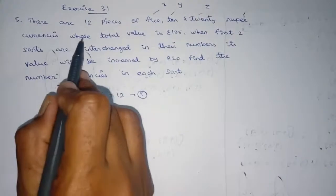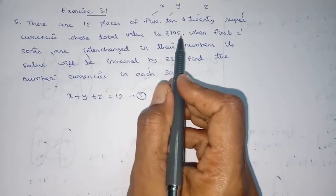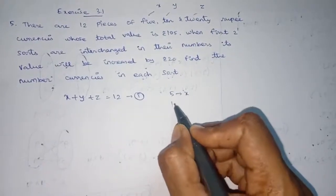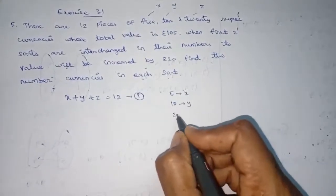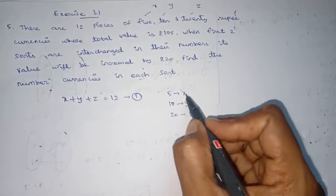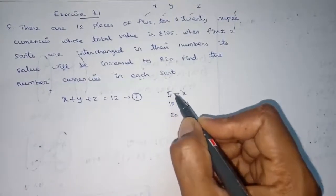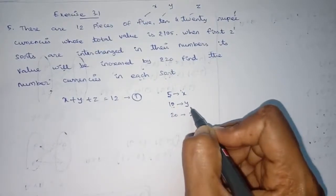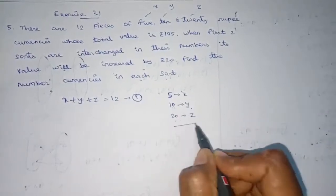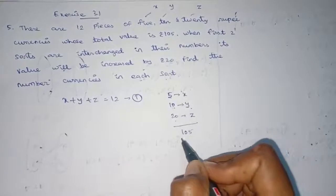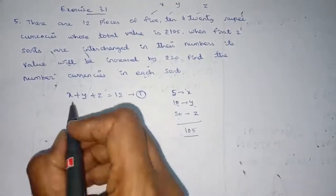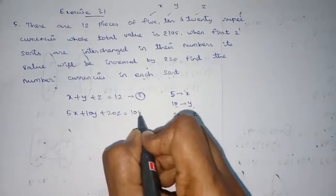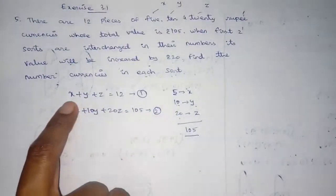The total value of the currencies is 105. The 5 rupee coins are X, the 10 rupee coins are Y, and the 20 rupee coins are Z. So 5X plus 10Y plus 20Z equals 105.